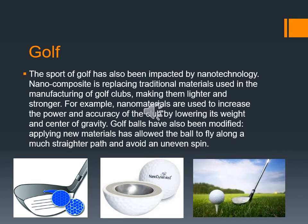Golf has also been impacted by nanotechnology. Nanocomposites are replacing traditional materials used in the manufacturing of golf clubs, making them lighter and stronger. For example, nanomaterials are used to increase the power and accuracy of the club by lowering its weight and center of gravity. Golf balls have also been modified — applying new materials has allowed the ball to fly along a much straighter path and avoid uneven spin.